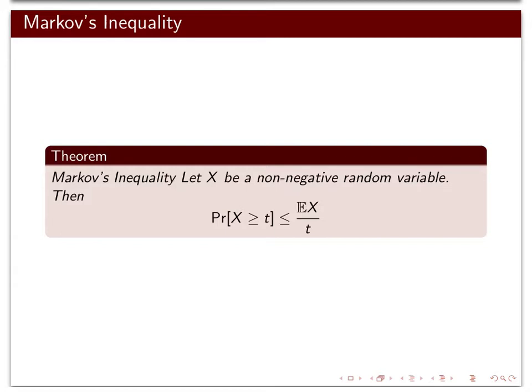It's good to remember the proof though, because the proof has a little trick that we use again and again in probability in different contexts. So let's prove it. We're going to assume that x is a discrete random variable just for simplicity, and we're going to write the expectation of x but break up the sum into two parts.